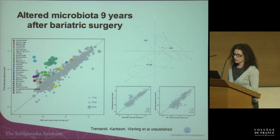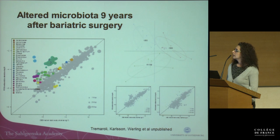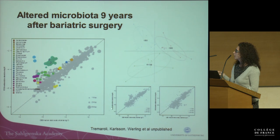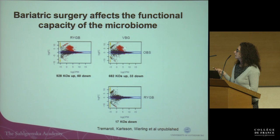We obtained blood and stool samples and observed that the gut microbiota is altered after surgery. There were clearer differences for the Roux-en-Y altered gut microbiota versus the obese microbiota; the altered microbes mostly belonged to Proteobacteria. We didn't find significant differences for the VBG microbiota against the obese microbiota, and no clear statistical difference between Roux-en-Y and VBG. We also observed differences in the functional capacity of the gut microbiota, with more genes upregulated in Roux-en-Y compared to obese than in VBG compared to obese.